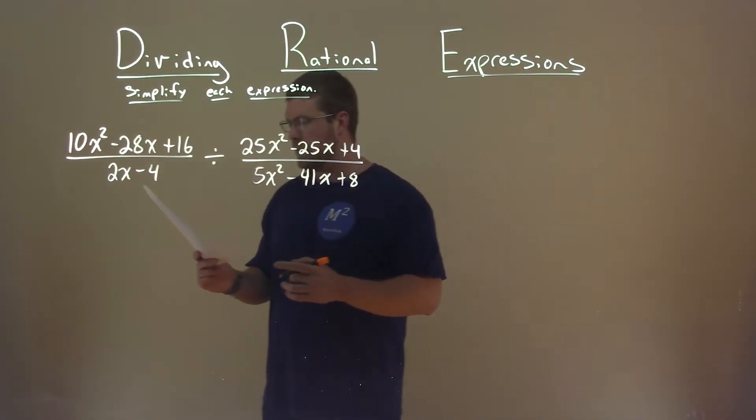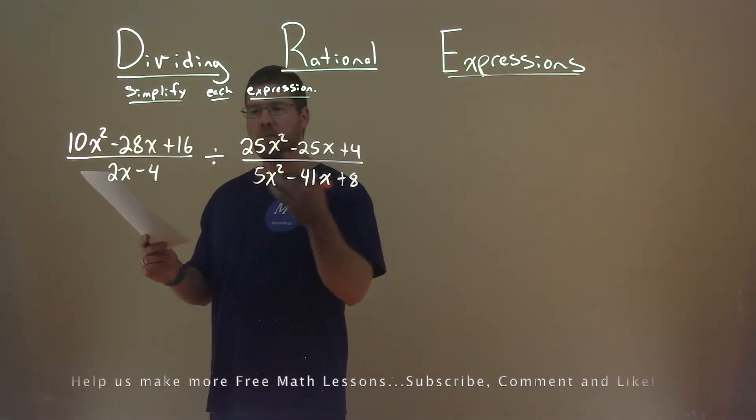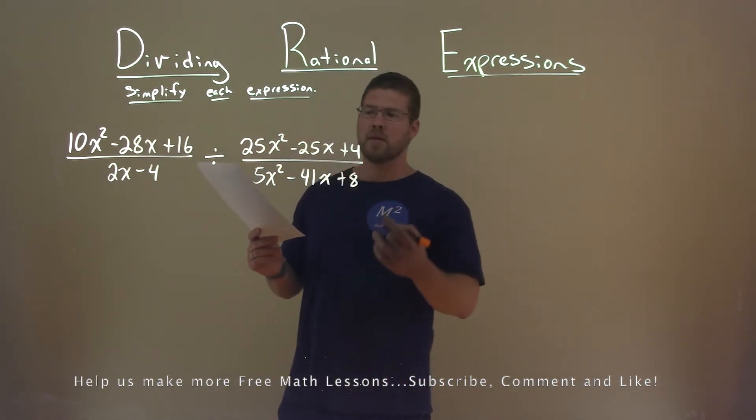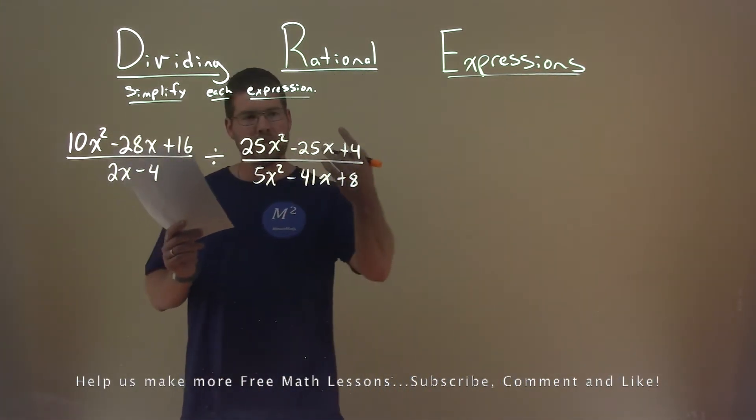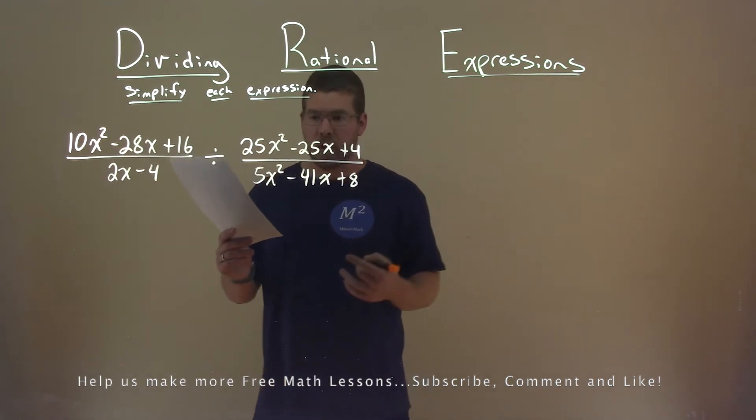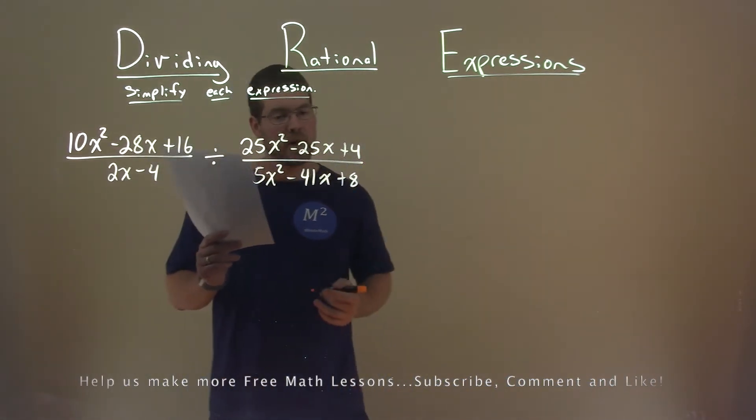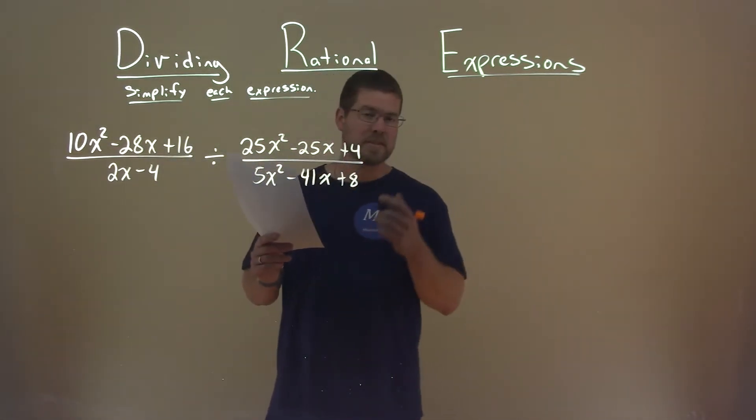We're given this problem right here. 10x squared minus 28x plus 16 divided by 2x minus 4 divided by 25x squared minus 25x plus 4 divided by 5x squared minus 41x plus 8, and we want to simplify this expression.